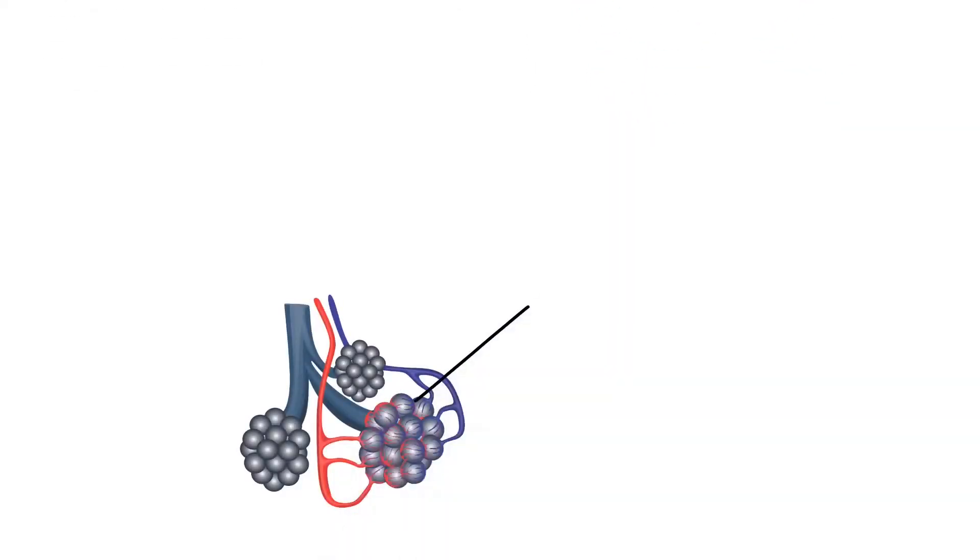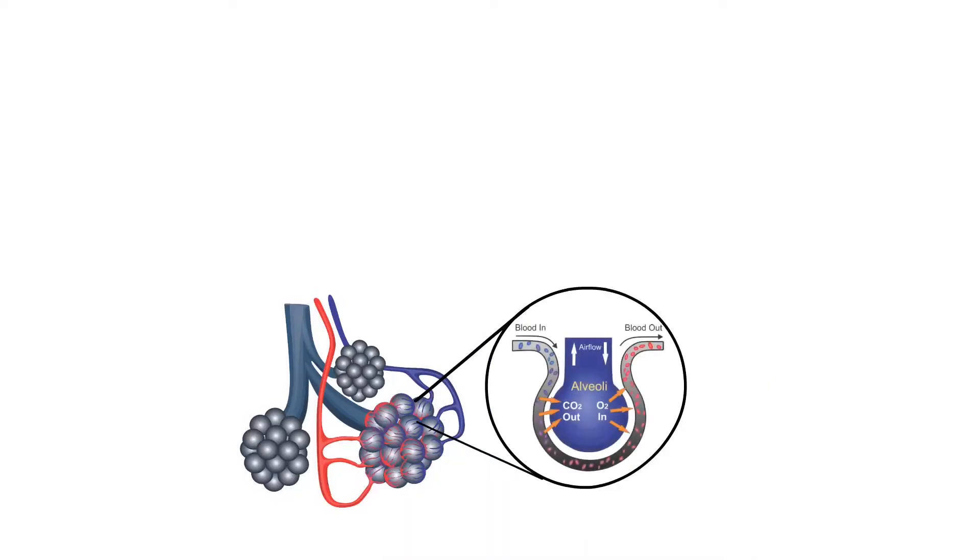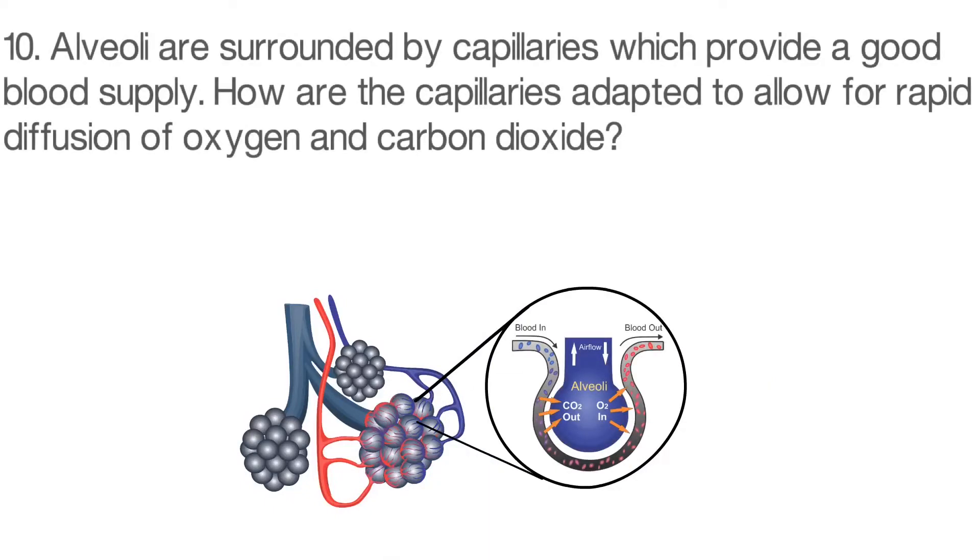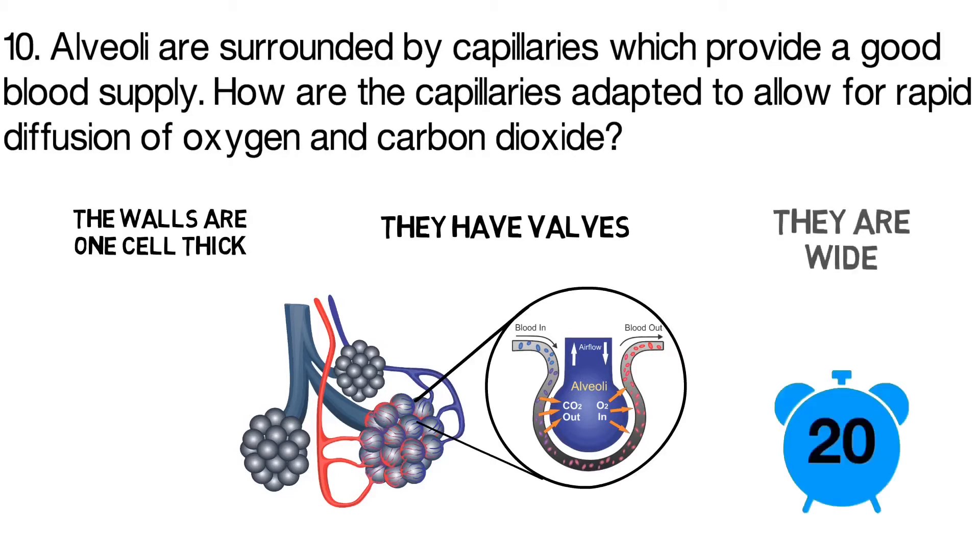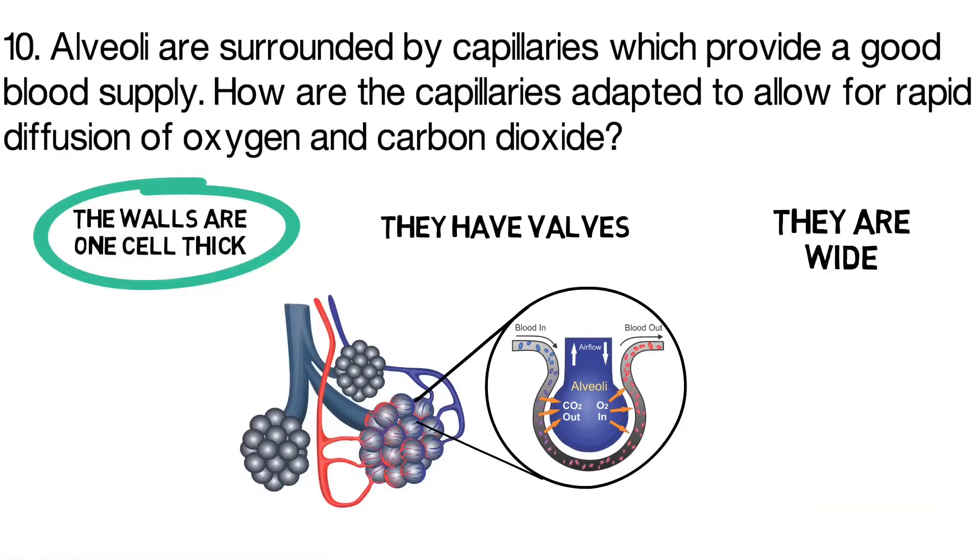And finally, question ten: alveoli are surrounded by capillaries which provide a good blood supply. How are the capillaries adapted to allow for rapid diffusion of oxygen and carbon dioxide? Are the walls one cell thick, do they have valves, or are they wide? The correct answer is the walls are one cell thick.